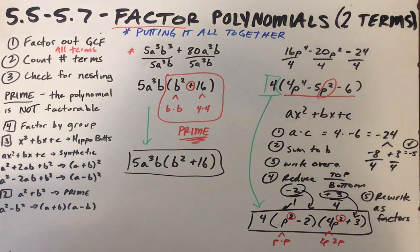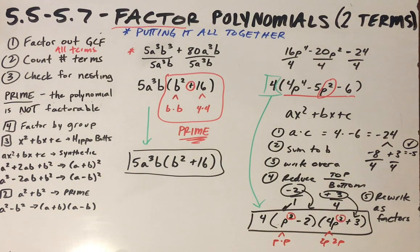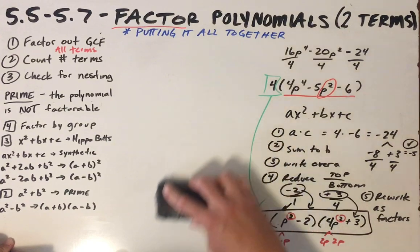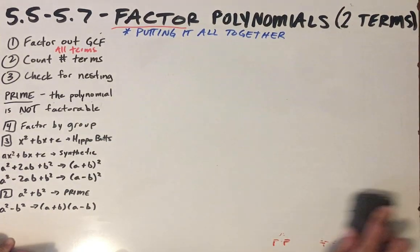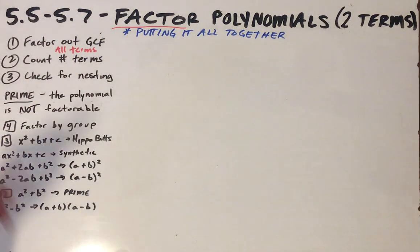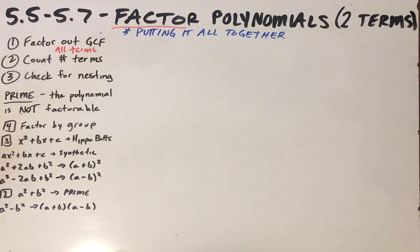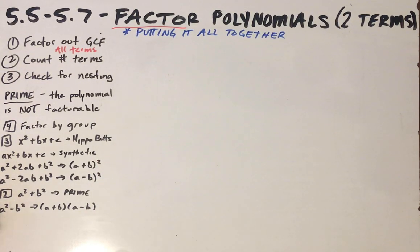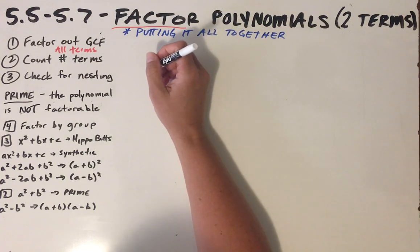I can't stress how important it is to always check for a GCF first, then count the terms, and use the appropriate method. Four terms: factor by grouping. Three terms: you have several options, but synthetic factoring works for all of them. Two terms: check for sum or difference of squares. This is the process I'd have memorized for the test and the final.